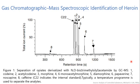Figure 1 shows the separation of opiate derivatives using N,O-bis-trimethylsilyl acetamide derivatization by GC-MS. The first peak corresponds to codeine, the second to acetyl codeine, the third to morphine, the fourth to 6-monoacetyl morphine, the fifth to diamorphine, the sixth to papaverine, the seventh to noscapine, and the eighth to caffeine. C22 indicates the internal standard — the n-alkane C22 used as the internal standard.